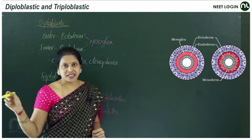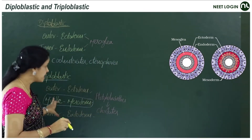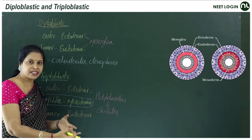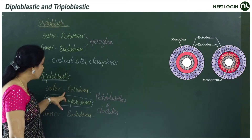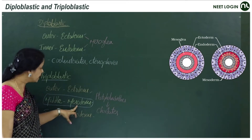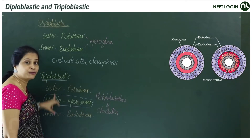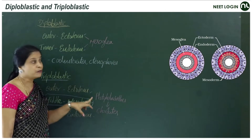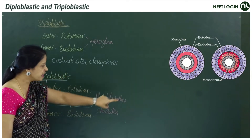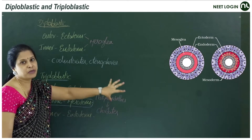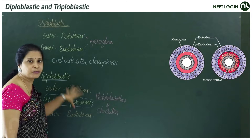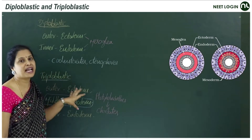Triploblastic animals are those in which a new germinal layer forms in between the outer ectoderm and inner endoderm — that middle layer is the mesoderm. It is a newly formed layer in these animals. The presence of mesoderm makes these organisms triploblastic.